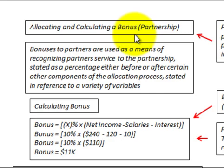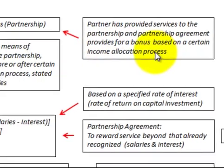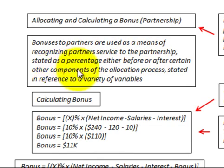Here we're going to be looking at allocating and calculating a bonus in a partnership. A partner has provided services to the partnership, and the partnership agreement provides for a bonus based on a certain income allocation process. Bonuses to partners are used as a means of recognizing the partner's service, and they're stated as a percentage either before or after certain other components of the allocation process, in reference to a variety of variables.